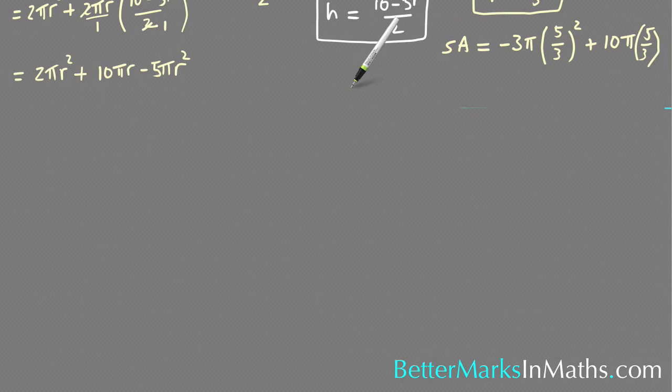So that surface area is equal to -3π times by squaring both of those numbers you get 25/9, plus 10π/1 times 5/3.